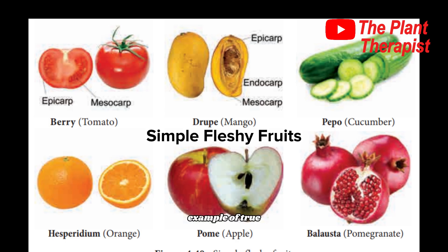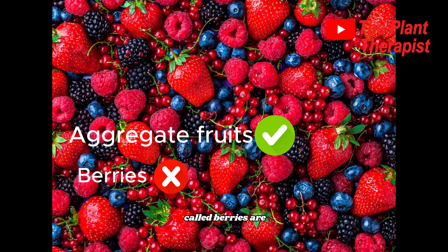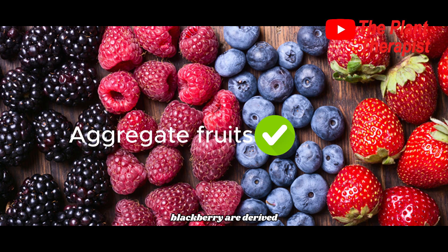There are three types of berry. True berries — examples include tomatoes, grapes, peppers, and eggplants. It might interest you to know that some fruits that include the word 'berry,' such as strawberry, raspberry, and blackberry, are botanically not berries at all. These so-called berries are actually called aggregate fruits, because they are derived from flowers with inferior ovaries where other flower parts such as the calyx and receptacle also contribute to the flesh.